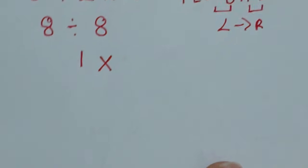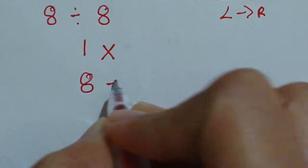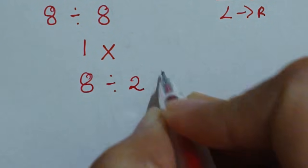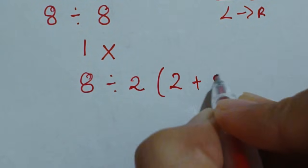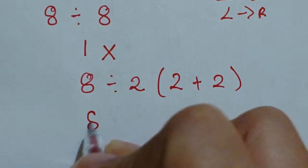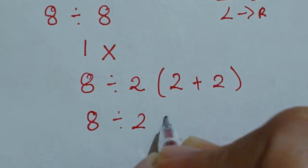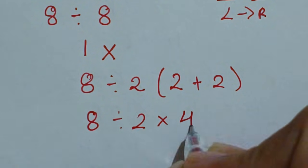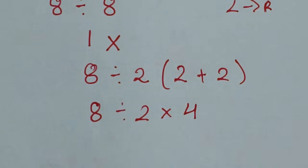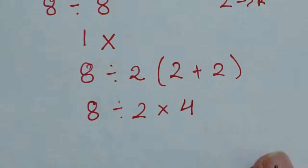So write down the expression once again, which is 8 divided by 2 bracket 2 plus 2. So 8 divided by 2 times 2 plus 2, which is 4. Then next, here you know division multiplication both have equal priorities, therefore go from left to right.